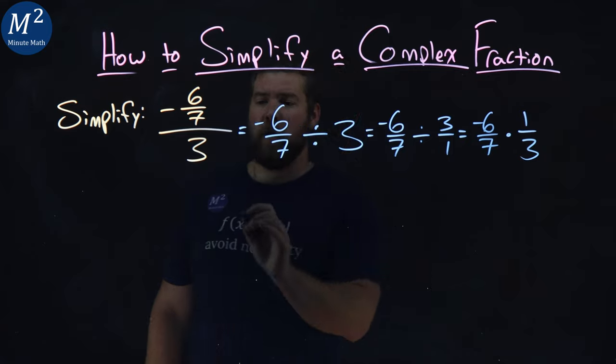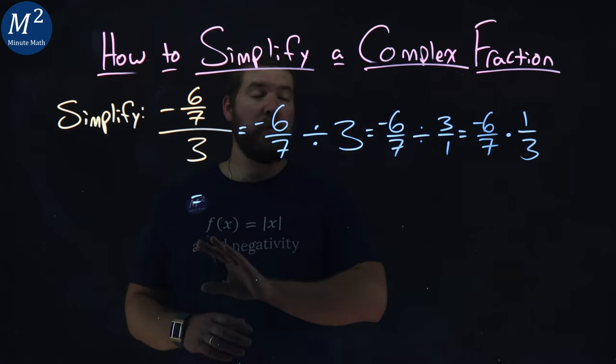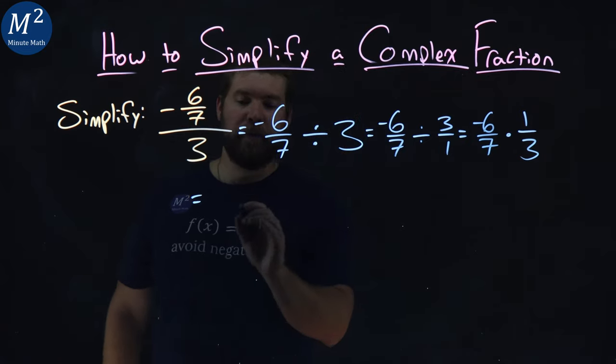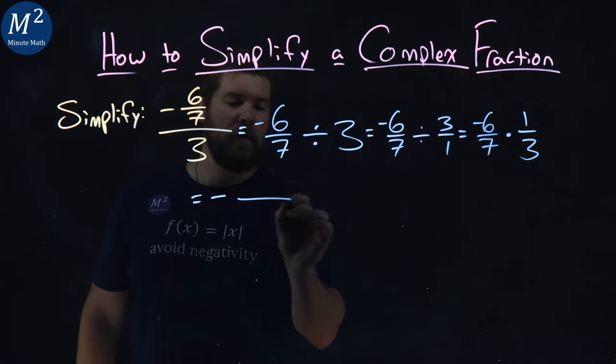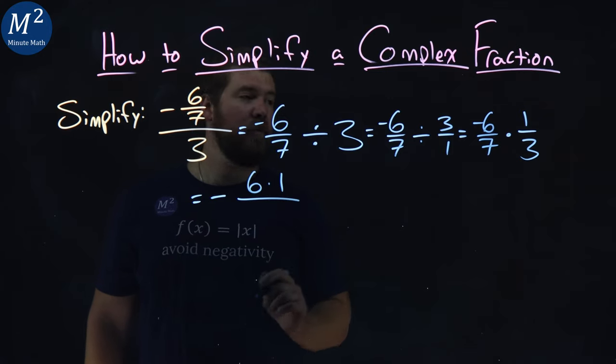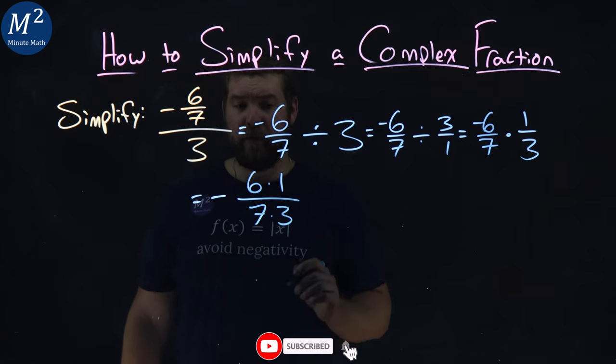All right. Now, our rules state with multiplication, we multiply across the numerator and the denominator. Let's keep the negative out here. We have six times one across the numerator and seven times three in the denominator.